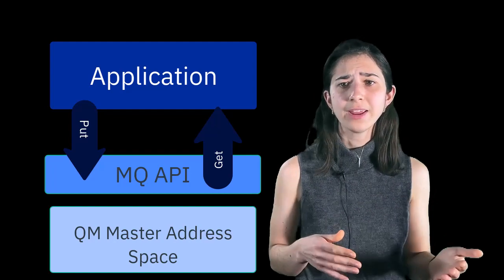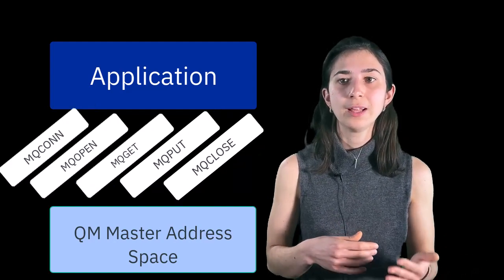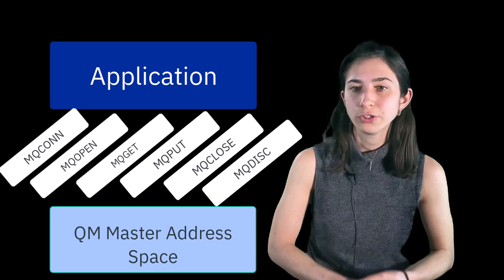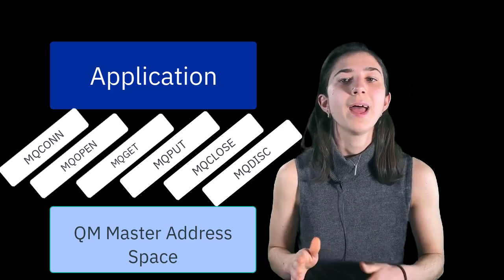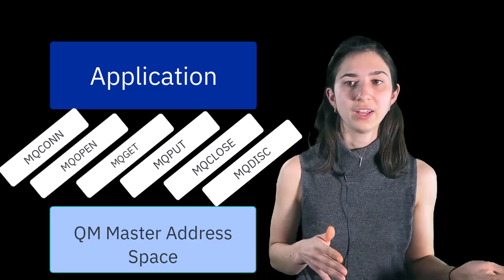There are a handful of API commands that a connecting application, like CICS or IMS, may want to use to connect to MQ, and they're interpreted to be understandable to MQ here. The local queuing component is the part of the queue manager responsible for interacting with z/OS.